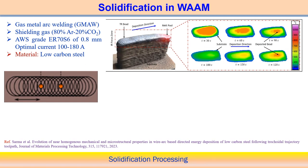For the second case in WAAM solidification, the gas metal arc welding process is used for wire arc additive manufacturing deposition. The shielding gas is around 80% argon and 20% CO₂, wire diameter is 0.8 mm, the wire material is low carbon steel, and current range varies between 100 to 180 amperes.